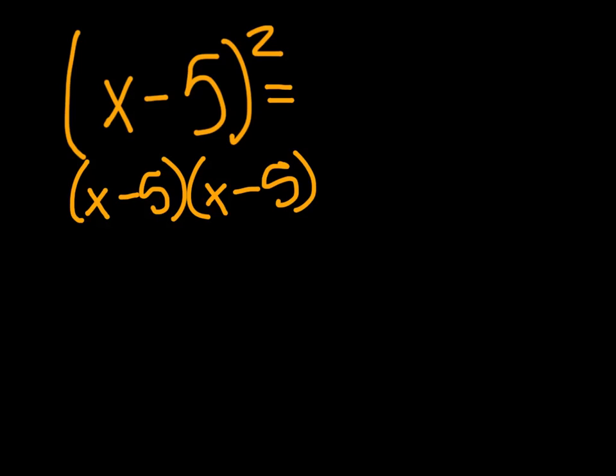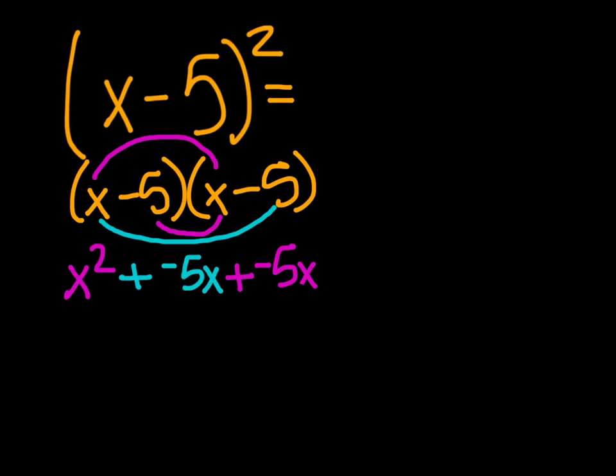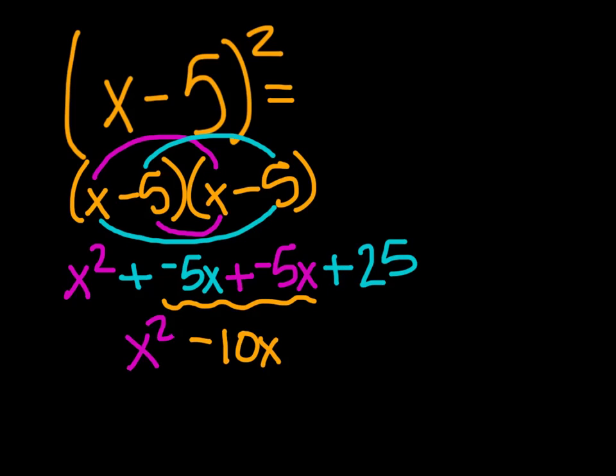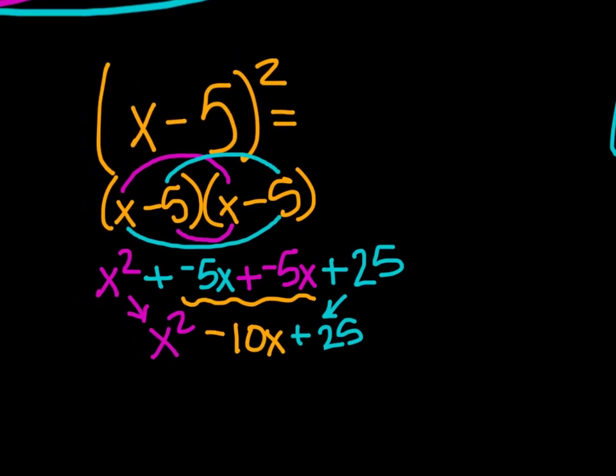We can do that FOIL method. We have x times x, which is x squared. Then x times a negative 5, which is plus a negative 5x. We then have negative 5 times x, which is plus a negative 5x. And our last one's negative 5 times negative 5 is positive 25. So combine like terms. There's our like terms. Negative 5x plus a negative 5x equals negative 10x. And then we have x squared and plus 25. So let's now compare and see if this looks like what we were doing before.